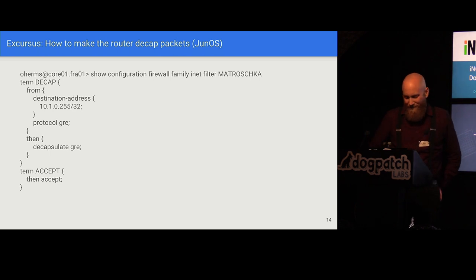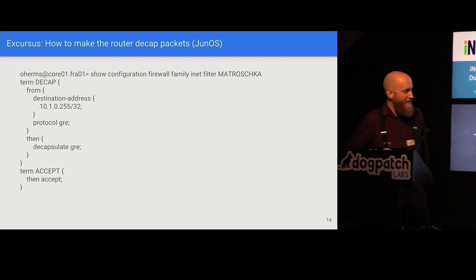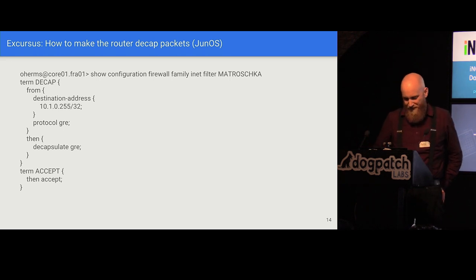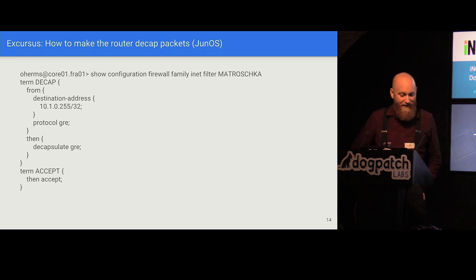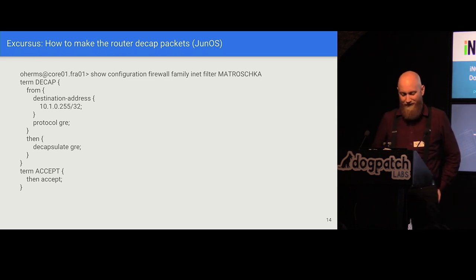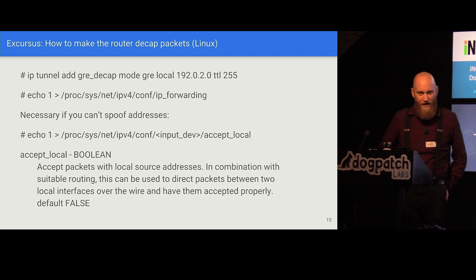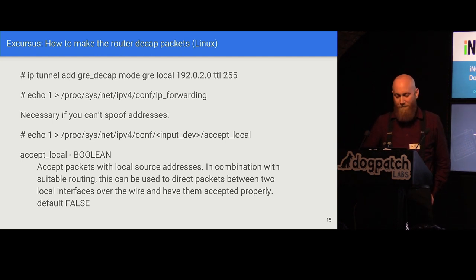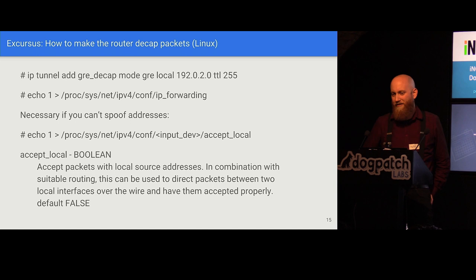A short excourse on configuring Juniper routers to decapsulate GRE packets without configuring actual GRE tunnels: we use firewall filters. You define a firewall filter, match the destination address and protocol GRE, and set the action to 'decapsulate GRE'. Every GRE packet with that destination IP address passing the interface where the filter is applied gets decapsulated and forwarded. This also works on Linux — you define a GRE tunnel with only the local address set and the remote address empty, which accepts any GRE packet matching the destination regardless of source.